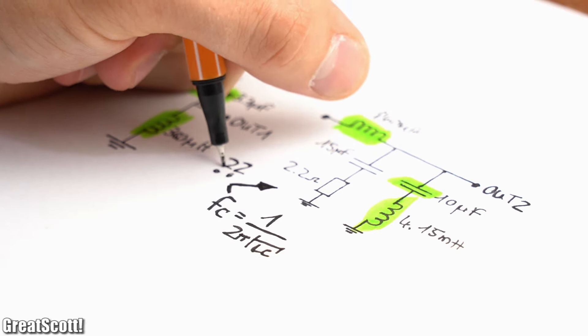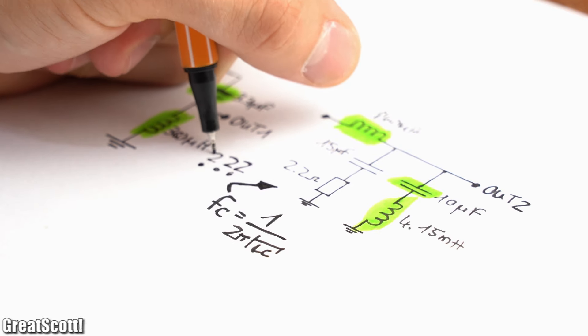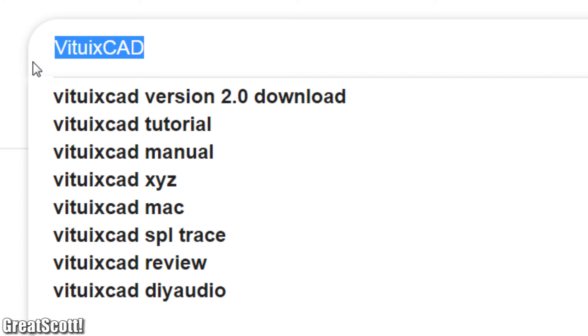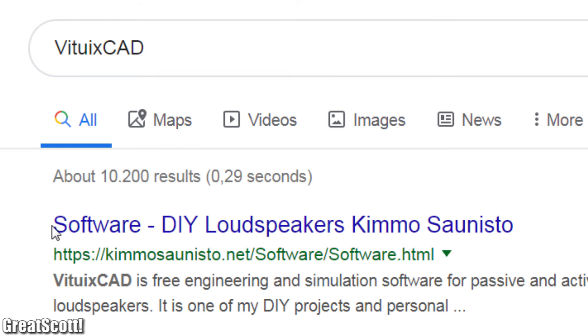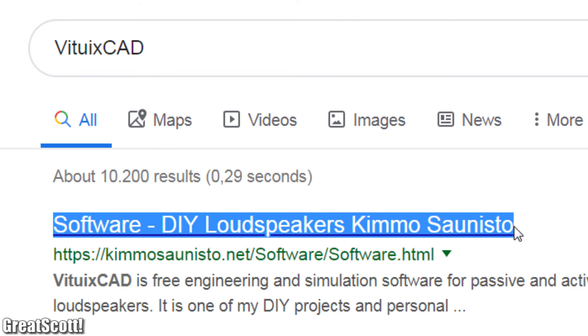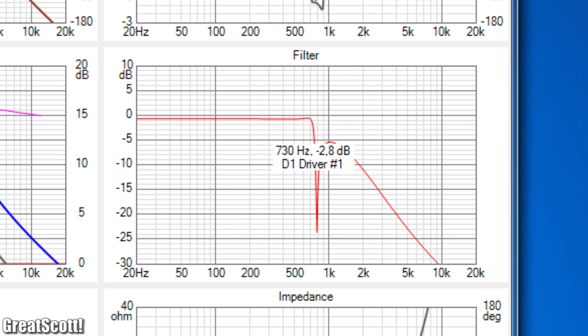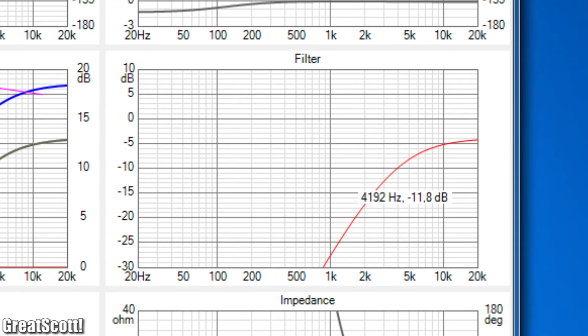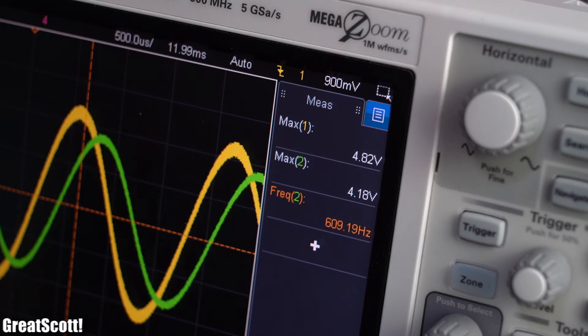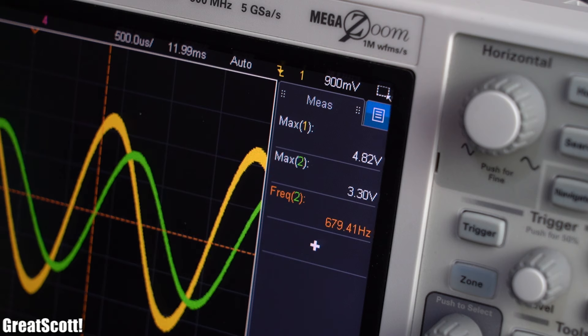Now sadly those simple formulas do not work with such crazy filters, but to make our life easier we can simply download the VituixCAD2 software in which we can rebuild the old filter design to find out that we got one low-pass filter with a cutoff frequency of around 700 Hz and one high-pass filter which pretty much always features a damping of underneath minus 3 dB. I also confirmed those values by doing a couple of measurements with the crossover.